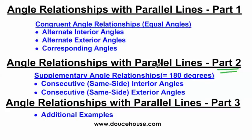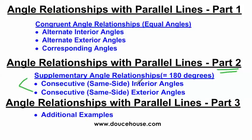Remember, if these lines aren't parallel, then these angle relationships don't exist. Today we're talking about parallel lines and the angle relationships that they have, specifically consecutive interior angles and consecutive exterior angles. These are both examples of supplementary angle relationships — two angles that add up to 180 degrees, versus my first video which covered congruent angle relationships.